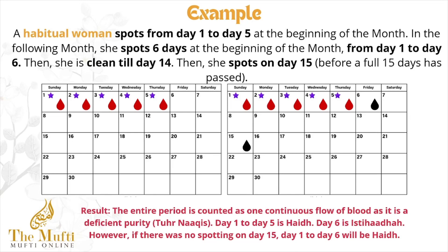The rule is: if the spotting exceeds ten days, you revert to your previous habit. We would have considered her habit changed to six days, but because it is now considered a continuous flow of blood over ten days, she has to revert to her previous habit — in this case nothing has actually changed. The result is the entire period is counted as one continuous flow of blood, as it is a deficient purity, Tuhre Naqis. Remember: the Tuhre Naqis is counted from the first spotting right up till day 15 — not from day 11 onwards for another 15 days. So day 1 to day 5 remains hayz; day 6 is istihadah. However, if there was no spotting on day 15, day 1 to day 6 would be hayz.